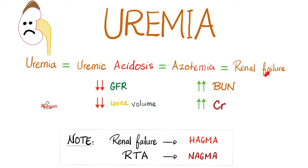You can call it end-stage renal disease when it's too late. Regardless, GFR is decreasing, urine volume is poor, and BUN and creatinine in the blood are high. Most of these waste products are acidic, so it gives me high anion gap metabolic acidosis.